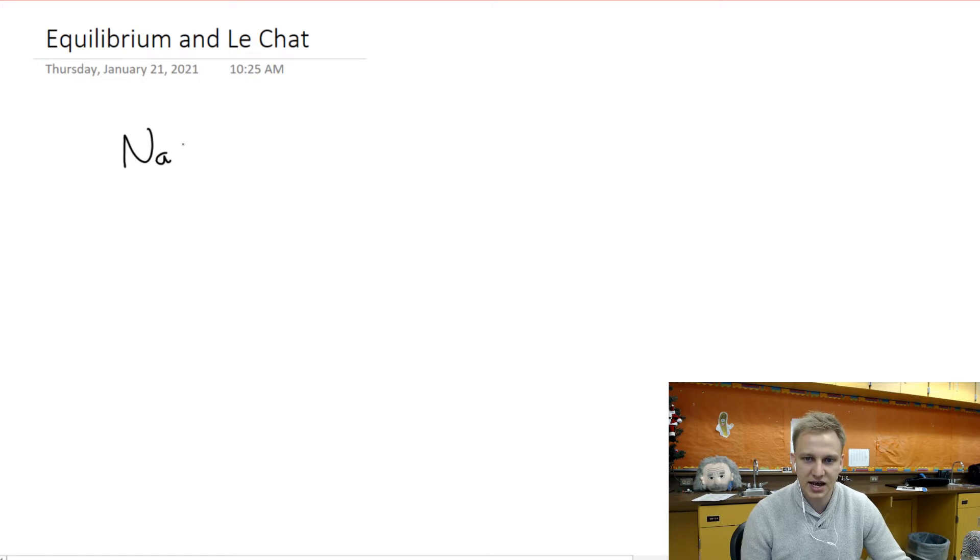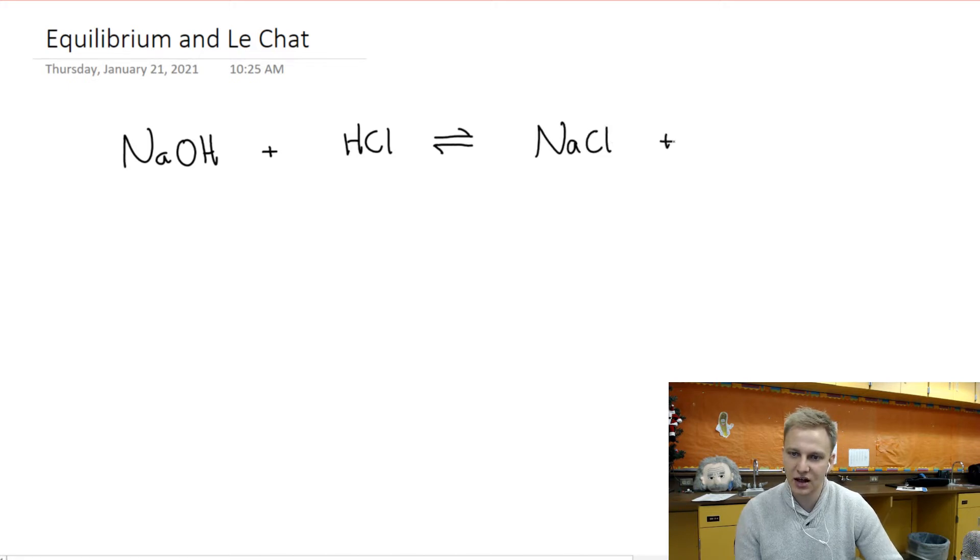Let's take sodium hydroxide and react that with hydrochloric acid. You would actually see that this reaction producing NaCl and H2O is actually reversible, where we end up using this fancy arrow here to say that this reaction can happen in the forward direction and the reverse direction as well.